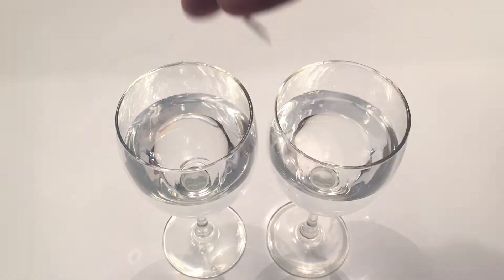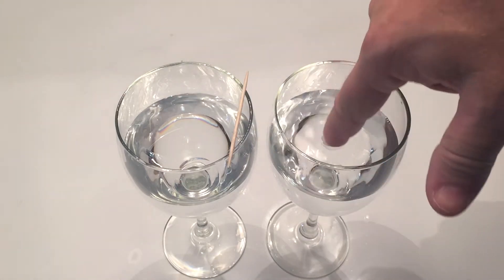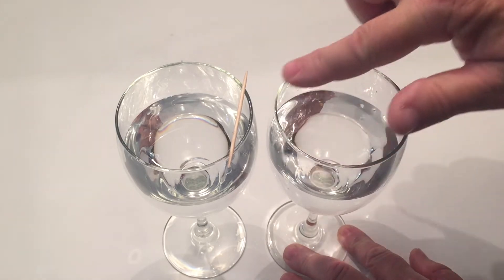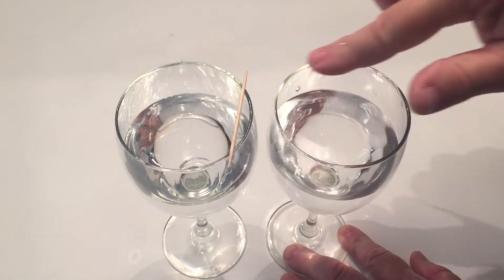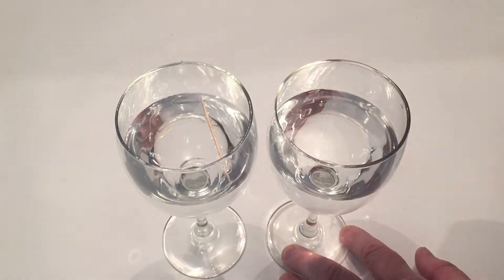You take your toothpick and put it on the end of one of the wine glasses. Make sure the wine glasses aren't touching each other. Dip your finger in like we did earlier and start rubbing in a circular motion around the outside of the glass, and you'll see that it's going to move the toothpick.